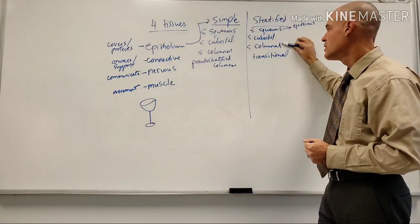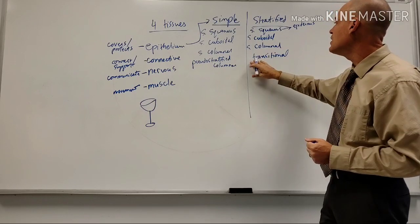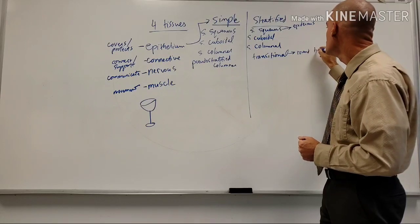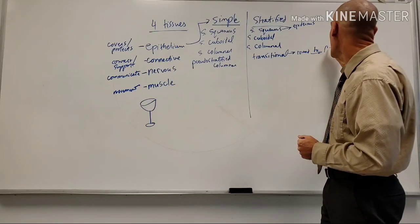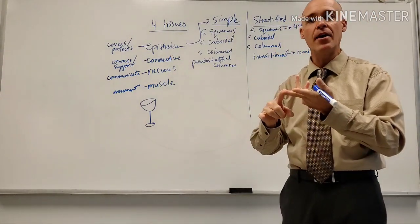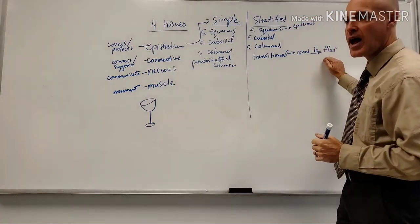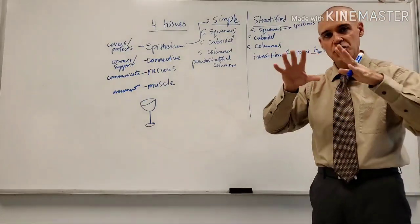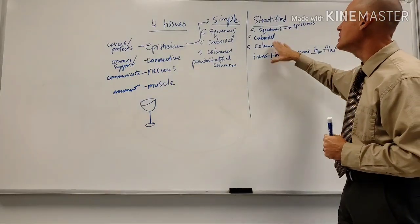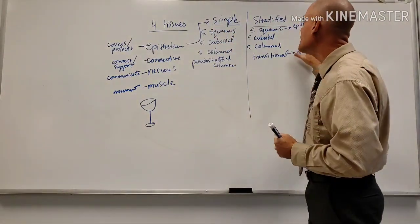Transitional epithelium is seen primarily in the urinary tract. The unique thing about it is that it goes from round to flat. In the urinary tract - the ureter and bladder stretch - so when the bladder is full and stretched, these cells look more flat; when the bladder is empty and relaxed, they look more round. It is a stratified multi-layer epithelium.